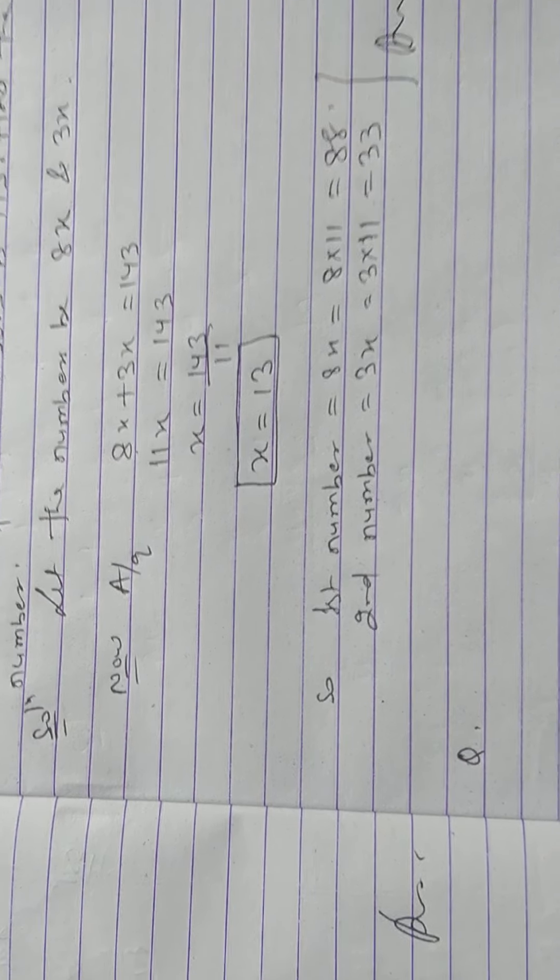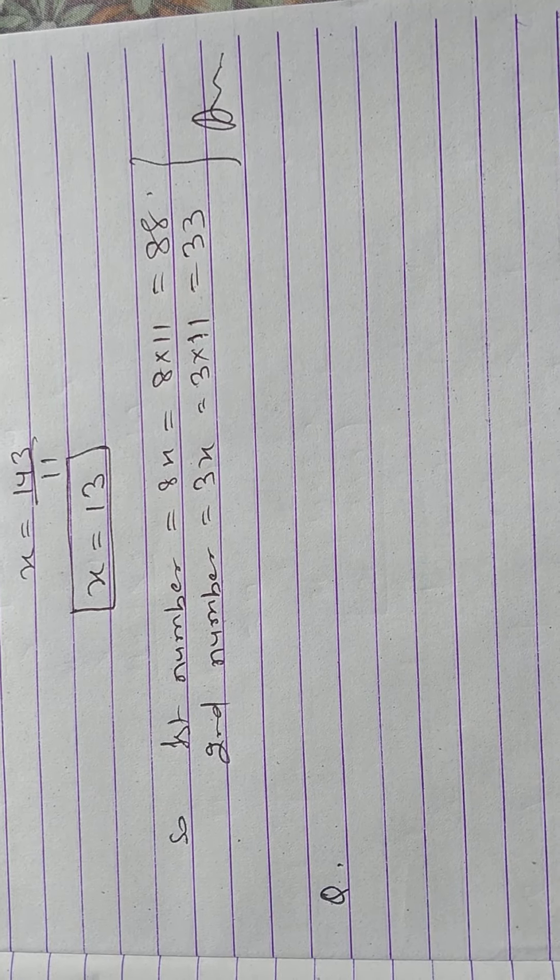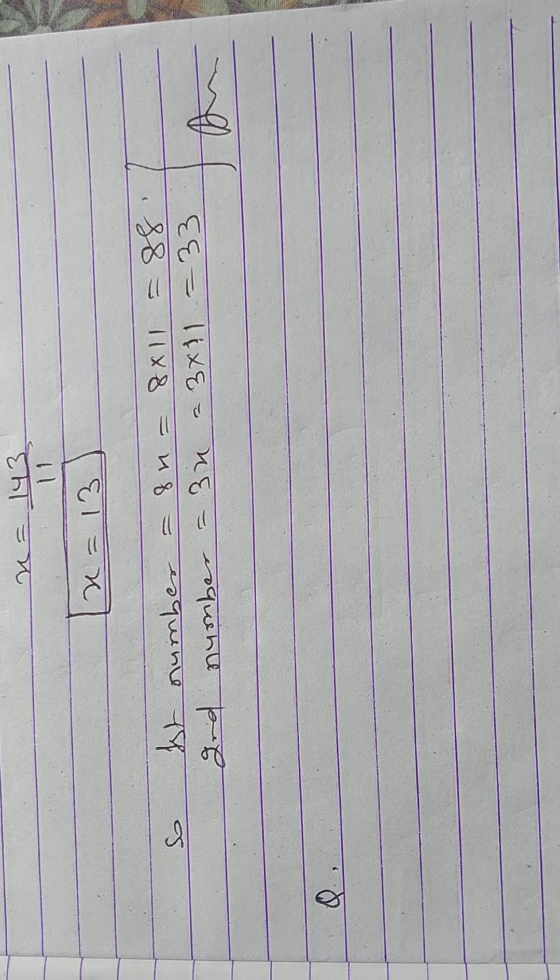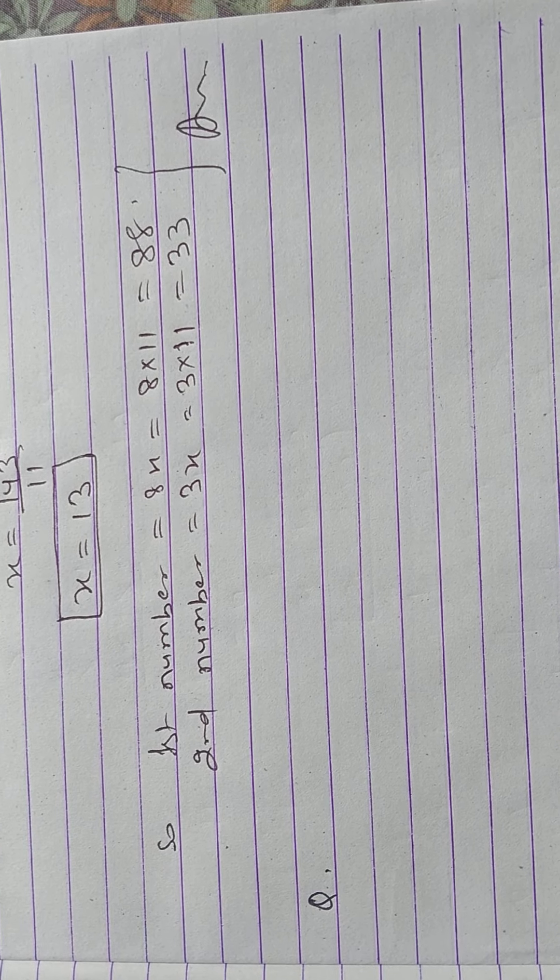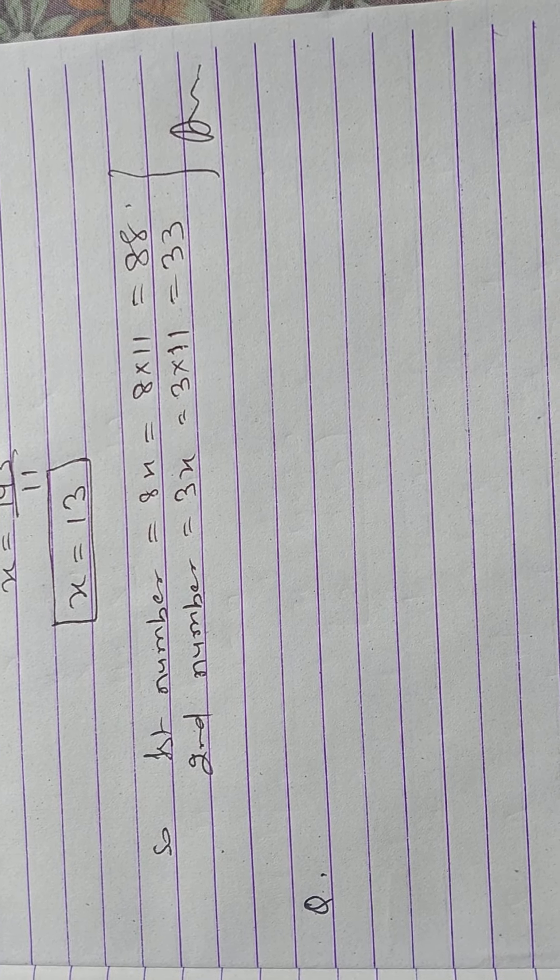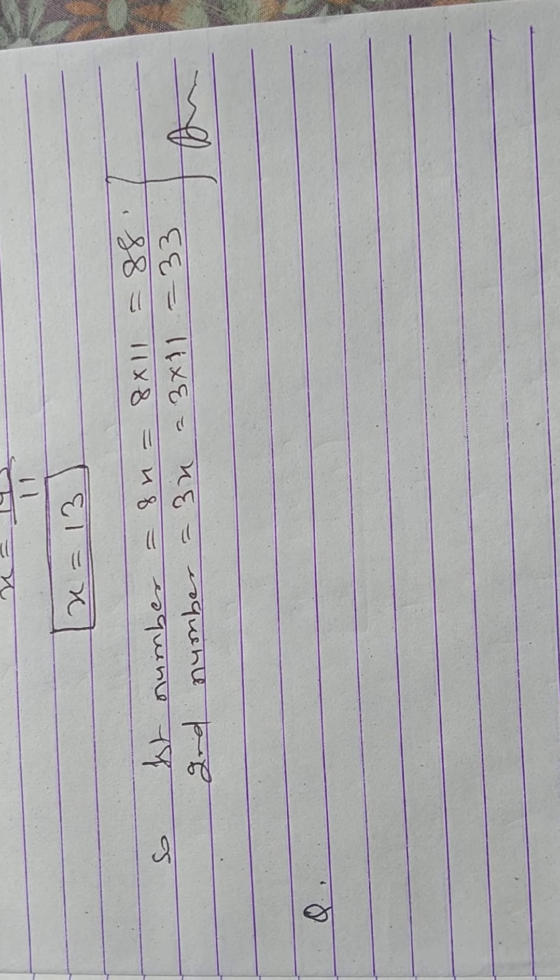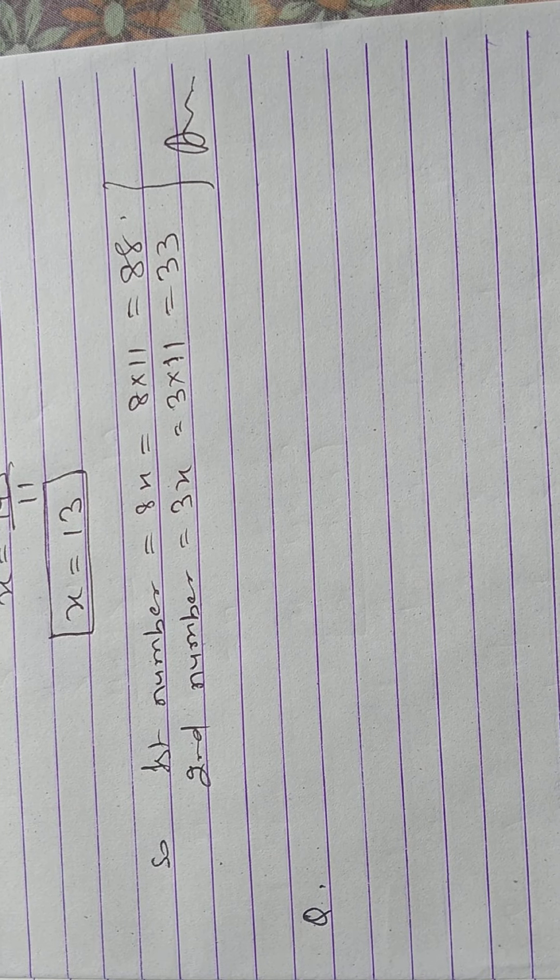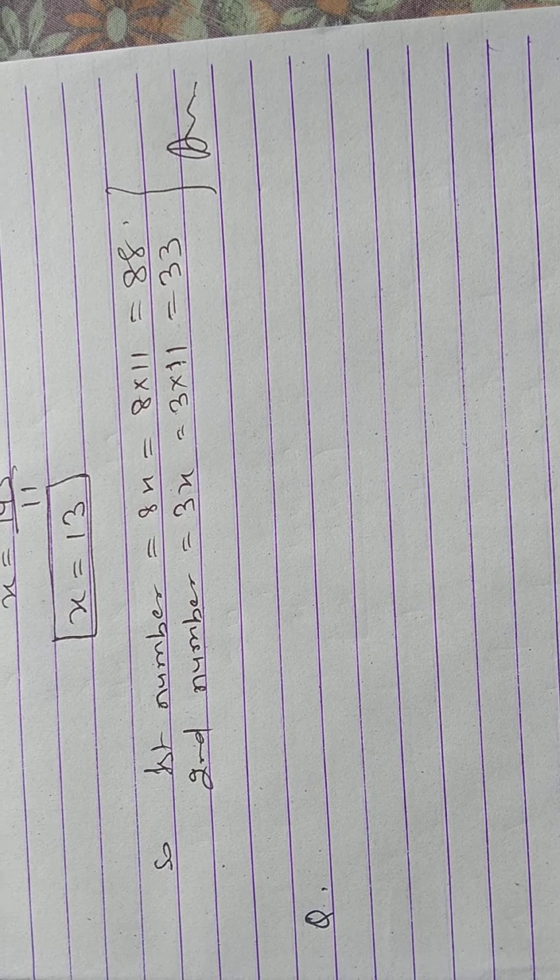Our next question is: 24 is divided into two parts such that 7 times the first part added to 5 times the second part makes 146. Find the parts.